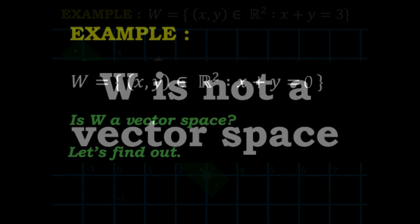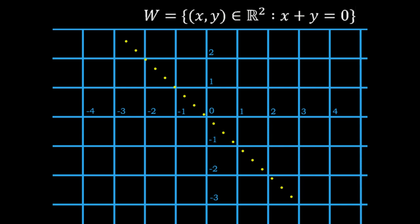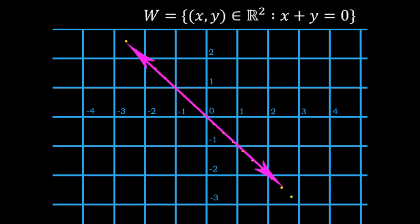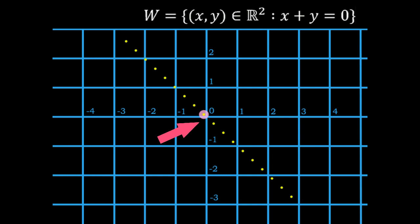This is what the graphical representation of the given set looks like. Every point on this line is a vector. If we replace all these points by pointed arrows with their tails at the origin and the heads at the points on the given line, we end up getting a graphical representation of the vectors that form this line. Adding any two of these vectors or multiplying any vector by a scalar gives us another vector from the same collection of vectors.